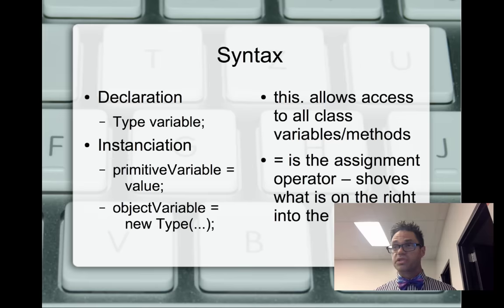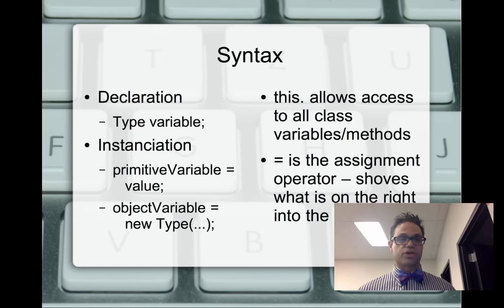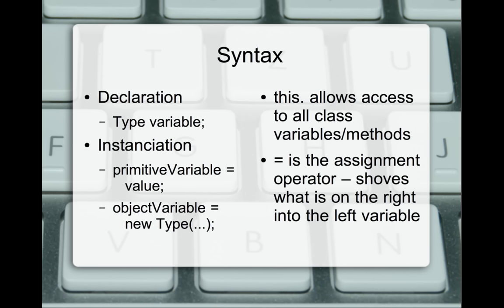We also have the 'this dot' syntax, which is how we access internal methods and data members. It's very helpful for organizing code. We also want to be clear on the difference between the assignment operator — the equals sign — and equals-equals, which checks for equality on ints and booleans. The assignment operator shoves whatever's on the right into a variable only — you can't shove into a value or a method.